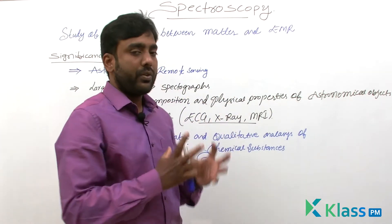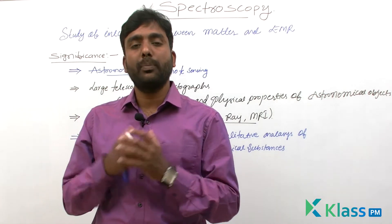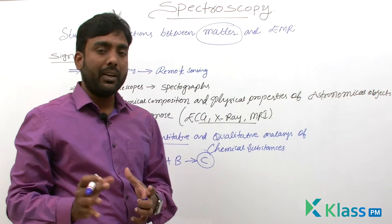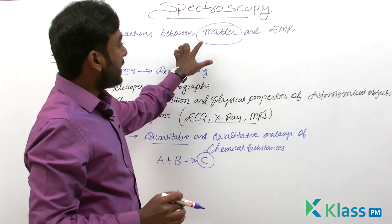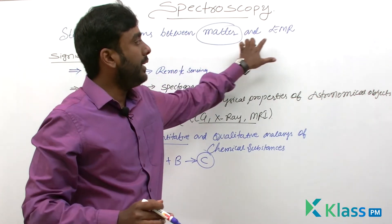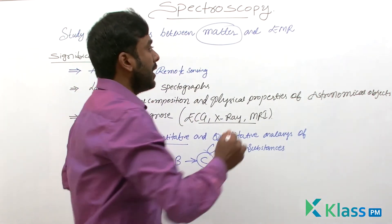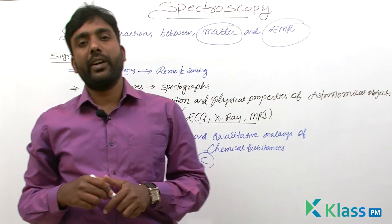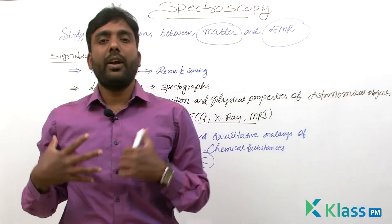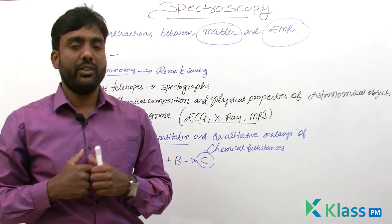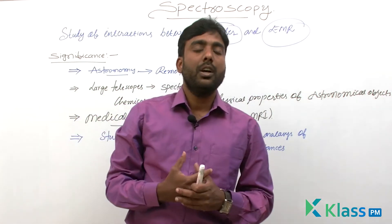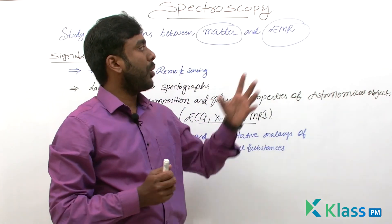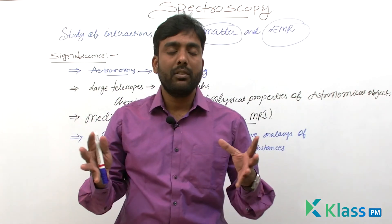Spectroscopy is the interaction between matter and electromagnetic radiation (EMR). We know what matter is, but what is EMR — that is electromagnetic radiation. So our next topic is electromagnetic radiation, which we will study to better understand spectroscopy.